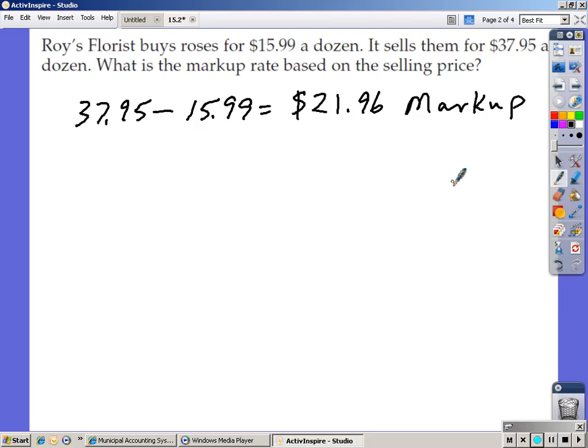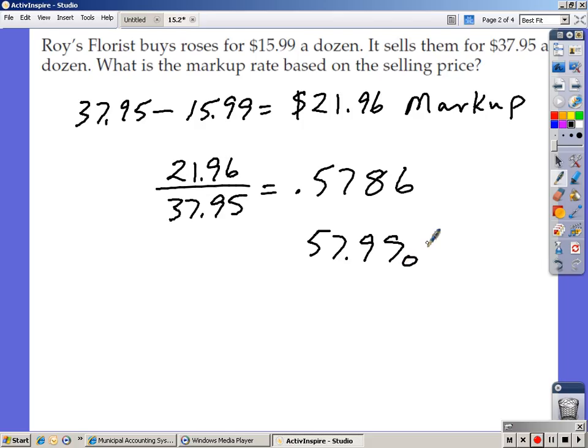Now we can use our formula that we had today, which is markup rate equals the markup divided by the selling price of $37.95. So $21.96 divided by $37.95 gives us .5786, which works out to be a markup rate of 57.9%.